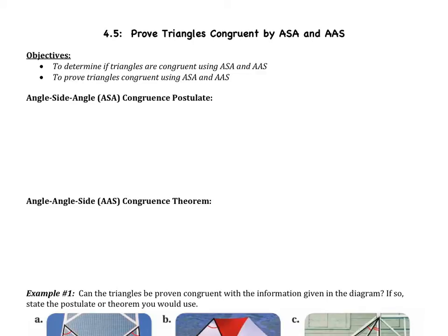We have two objectives. We are first going to determine if triangles are congruent, then we are going to actually prove the triangles congruent. We're going to start by learning our two new postulates and theorems.